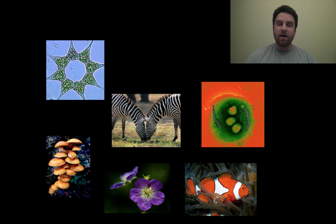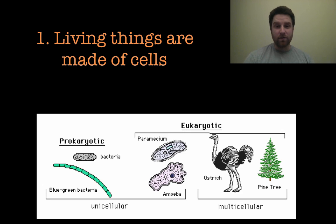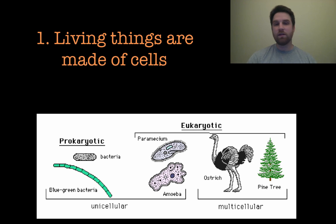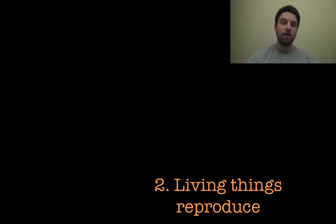There are main characteristics of living things that I want to make sure you get here. Number one, living things are made of cells. You have things like unicellular and multicellular organisms. Uni means one, multi means more than one, so an organism is made of one cell or many cells, just like the picture you see here.